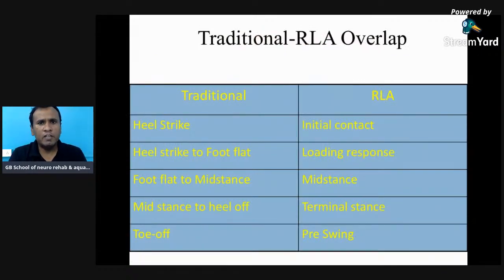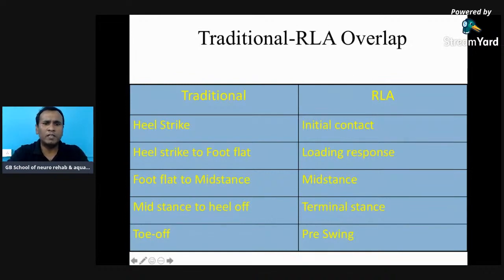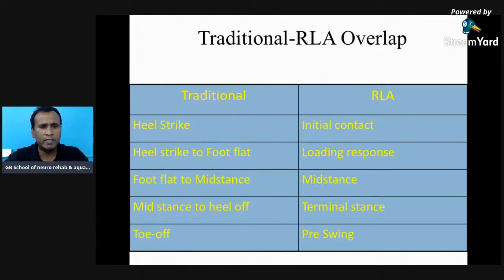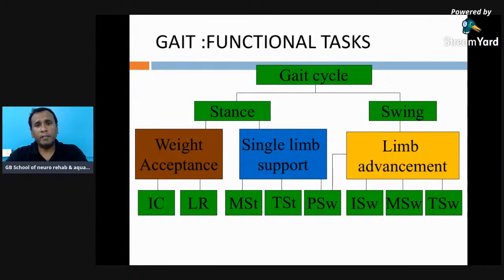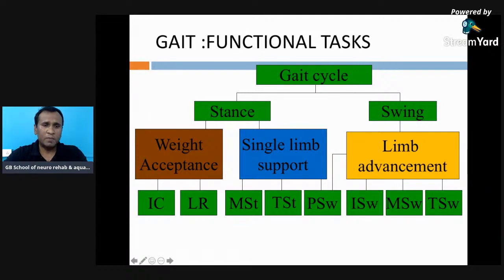The traditional classification and the RLA classification are not exactly the same — there is a little overlap, but no complete exact overlap. We don't consider every heel strike as initial contact. This point should be kept in mind when planning assessment and treatment. In the stance phase, there are two main purposes: weight acceptance — covering initial contact and loading response — and single limb support, covering mid stance through pre-swing, providing stance stability so the opposite limb can swing.